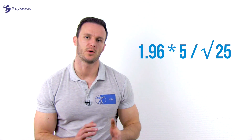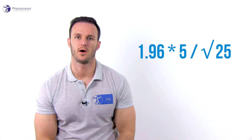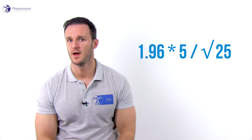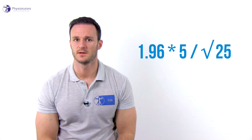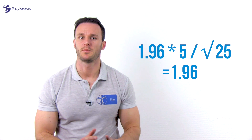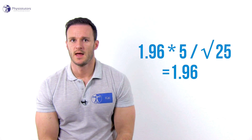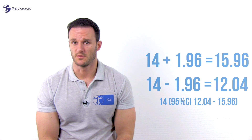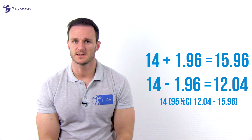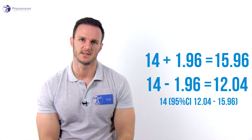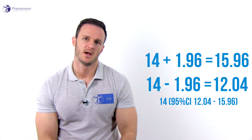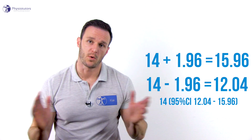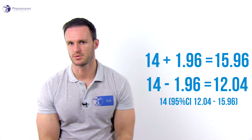Let's say we found this effect in only 25 patients. Then we end up with a 95% confidence interval of 1.96 times 5 divided by the root of 25, so 1.96 times 1. We would then find a result between 12.04 and 15.96 in 95 out of 100 cases. So the confidence interval got wider and our results less precise.